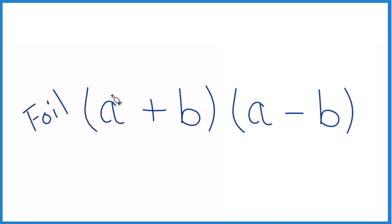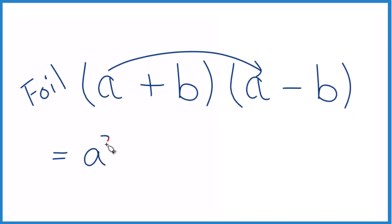So we'll take the first term, a times a. That'll give us a squared. Then we'll take the outside. So the outside here and here, a times negative b. That gives us negative ab.